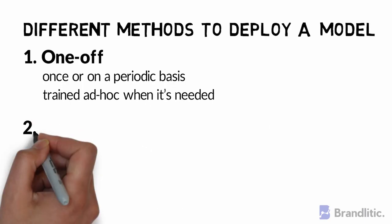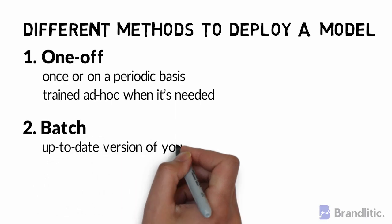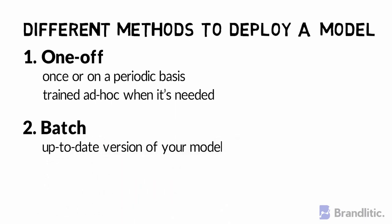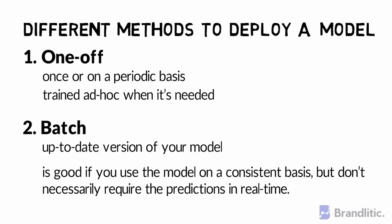Second, Batch — batch training allows you to constantly have an updated version of the model. It is a scalable method that takes a subsample of data at a time, eliminating the need to use the full dataset for each update. This is good if you use a model on a consistent basis, but don't necessarily require the predictions in real-time.